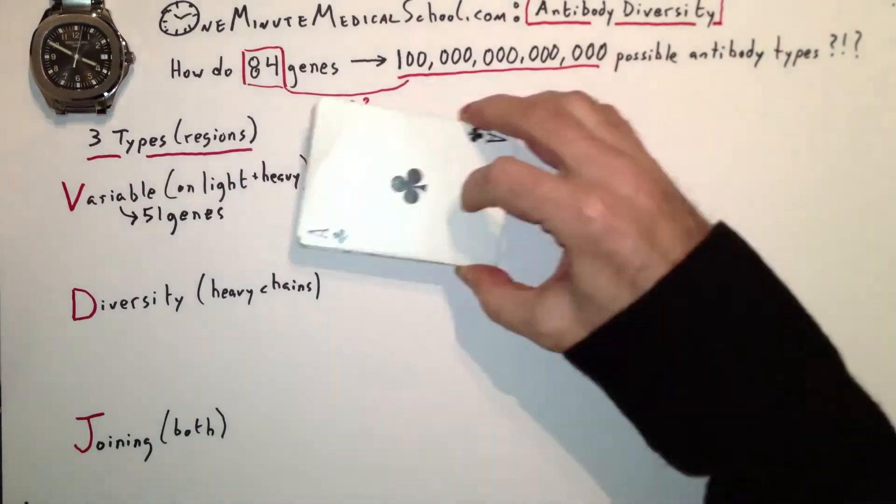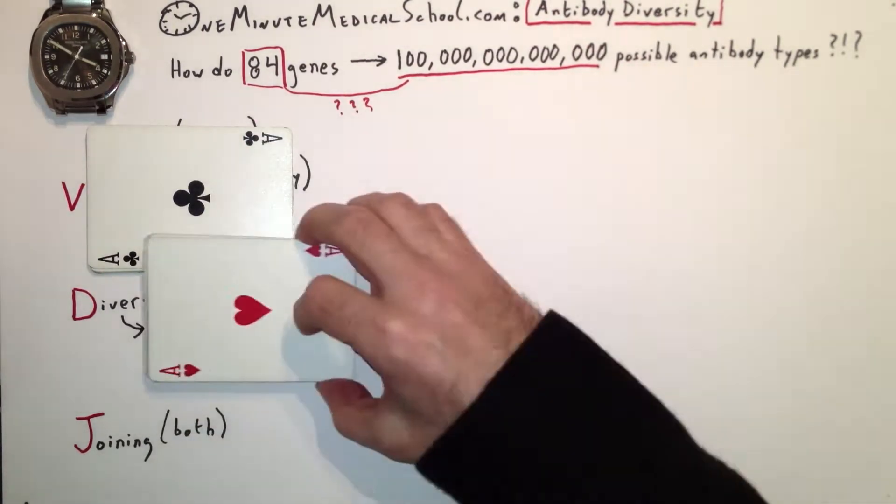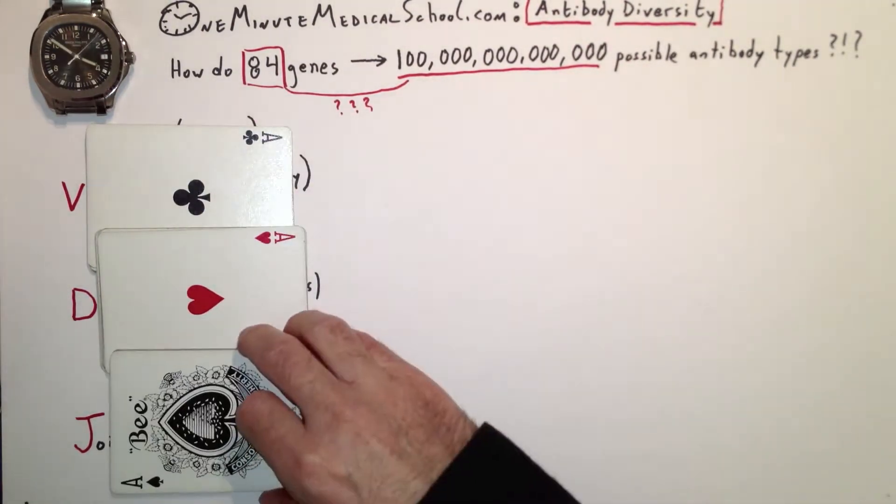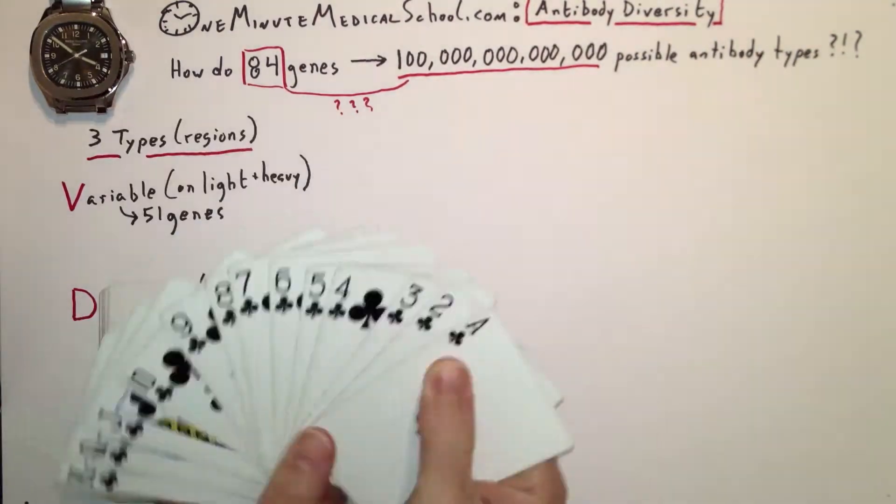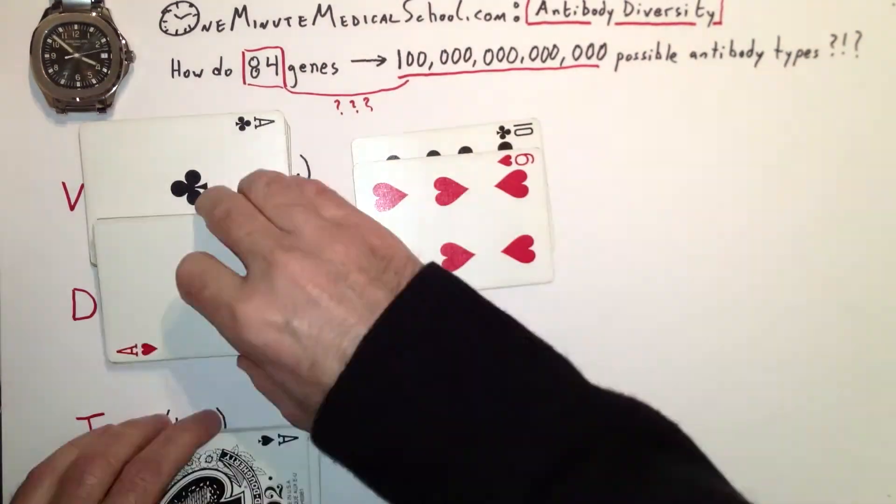It's like choosing cards. You have 51 times 27 times 6, and those, in combination, make the heavy chain.